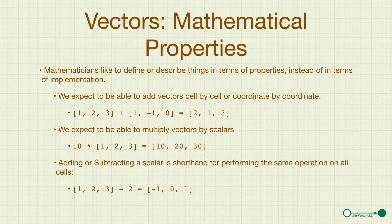We also expect some convenience notations. We expect multiplying by a scalar, as we show in the 10 times column to perform the same multiplication to every cell, and we expect adding or subtracting a scalar to again do the same operation to every cell.